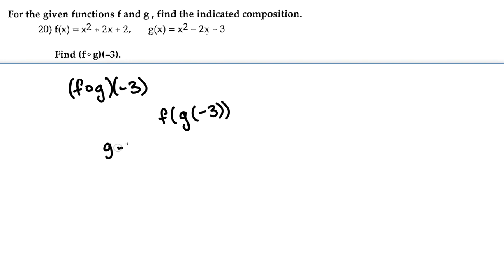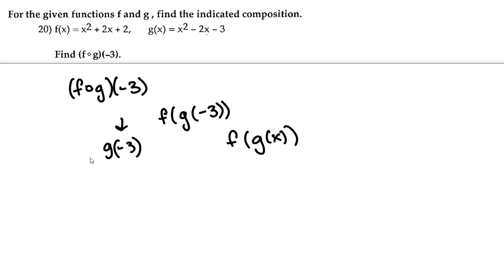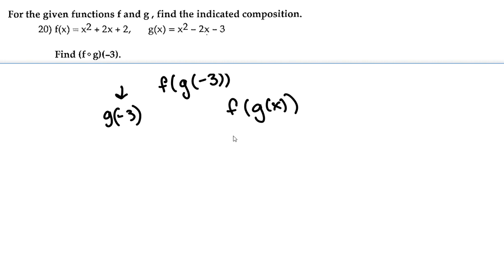There are two ways you can do this. You can find g of negative 3 — plug negative 3 into the function g, solve it, and then plug that result into f of x — or you can plug the function g of x directly into f of x. Let's start with the first way.